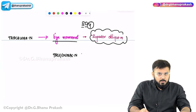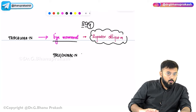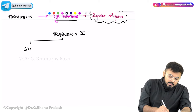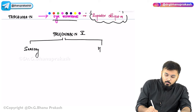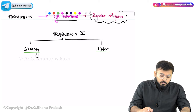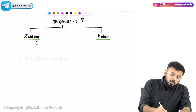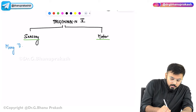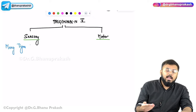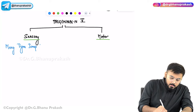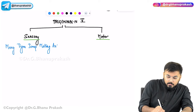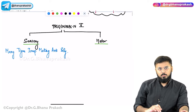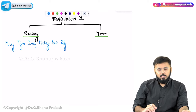The trigeminal nerve (CN V) is the fifth cranial nerve and is a mixed nerve with both sensory and motor functions. For the sensory functions, a useful mnemonic is: 'Many Tigers Jump Making Ants Silly.'